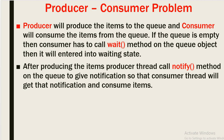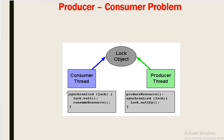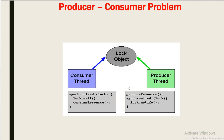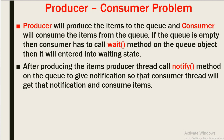Now we will see another example: the Producer-Consumer problem. The producer will produce items to the queue and the consumer will consume items from the queue. The consumer will be in the waiting state if the queue is empty — it has to call the wait method on the queue to enter the waiting state. After the producer produces an item, it will call the notify method on the queue, so that the consumer thread gets the notification and consumes the items.